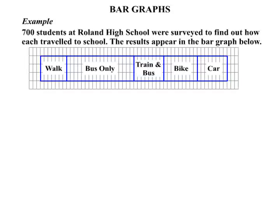Now in this lesson we're looking at bar graphs. Let's start with an example. 700 students at Rowland High School were surveyed to find out how each travelled to school, and the results appear in the bar graph below.